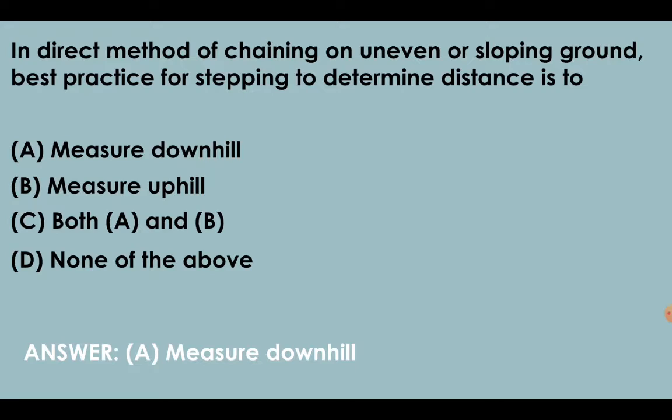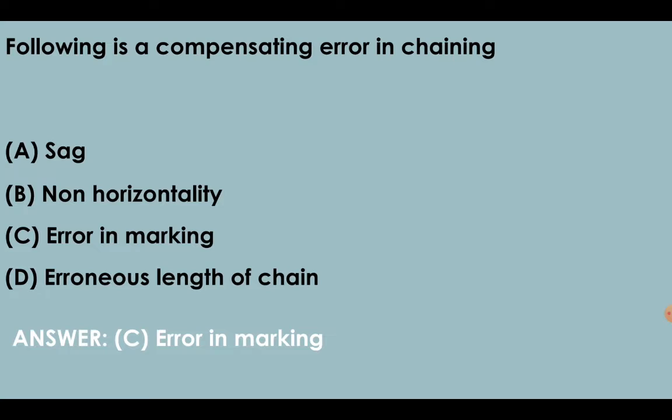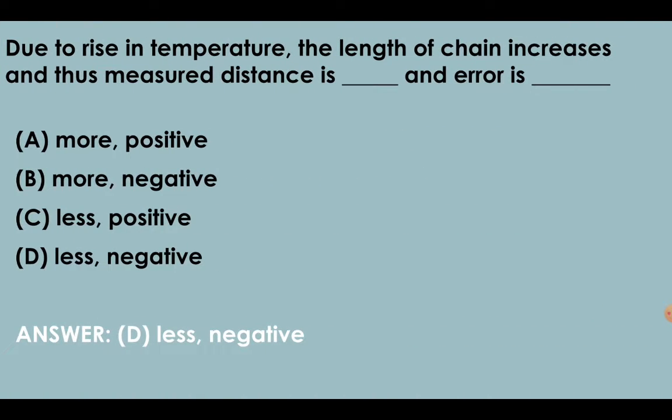In direct method of chaining on uneven or sloping ground, best practice for stepping to determine distance is to measure downhill. Error in marking is a compensating error in chaining. Due to rise in temperature, the length of chain increases and thus measured distance is less, and the error is negative.